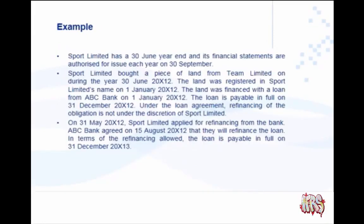Let's look at an example of Sport Limited. Sport Limited has a 30 June year end and its financial statements are authorized for issue on 30 September. These dates are very important in a theory question — there are many things to identify that trigger certain theory criteria. Sport Limited bought a piece of land from Team Limited during the year ended 30 June 2012. The land was registered in Sport Limited's name on 1 January 2012 and was financed with a loan from ABC Bank on 1 January 2012.